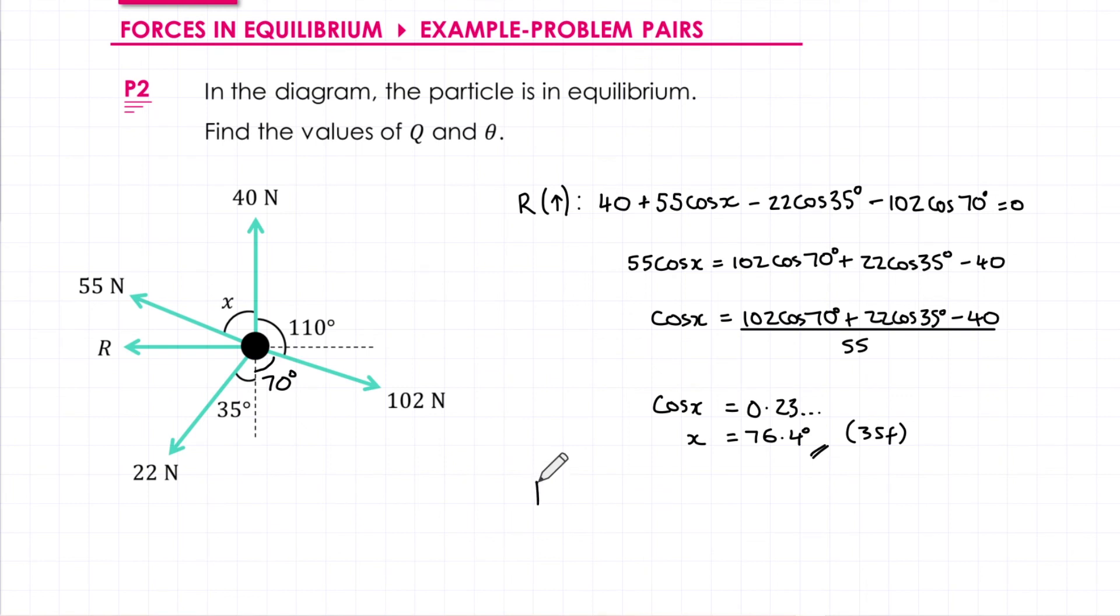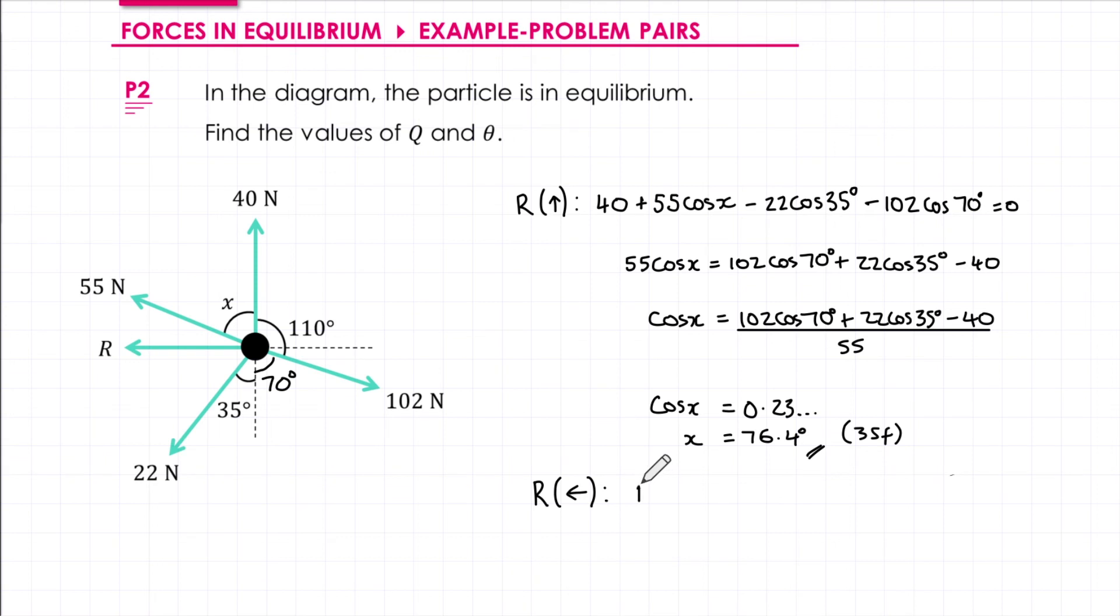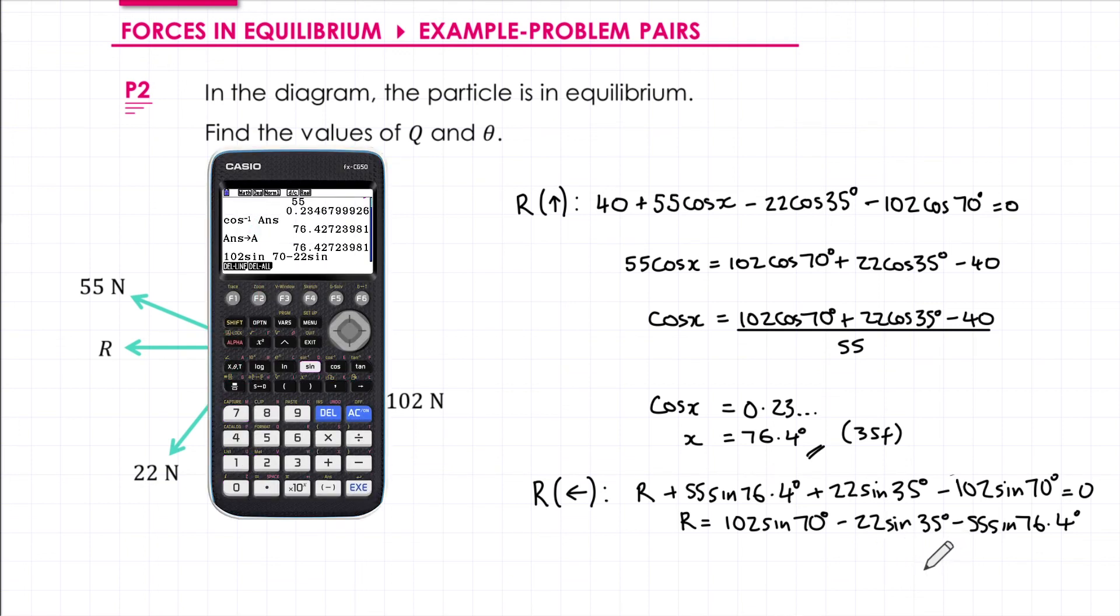To find R then we'll resolve horizontally. I'm going to take left to be the positive direction but it doesn't matter if you chose right. To the left we have force R. We have a component of the 55 newton force. We're not crossing the angle so it'll be 55 sin X, where X is 76.4. We also have a component of the 22 newton force. Again not crossing the angle. And in the other direction we have a component of the 102 newton force, which again isn't crossing the angle so we'll be using sine there too. And that's all in equilibrium so it equals zero. Rearranging we take everything over to the other side. And then we're going to put this into our calculator. Don't forget to use the exact value for the 76.4. And if we do that we get 29.8 newtons to three significant figures.